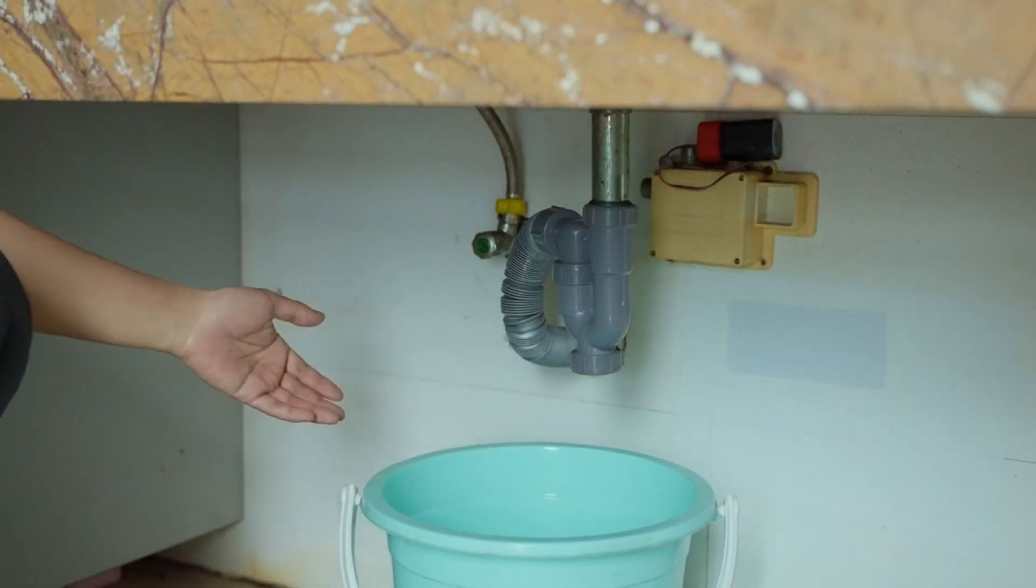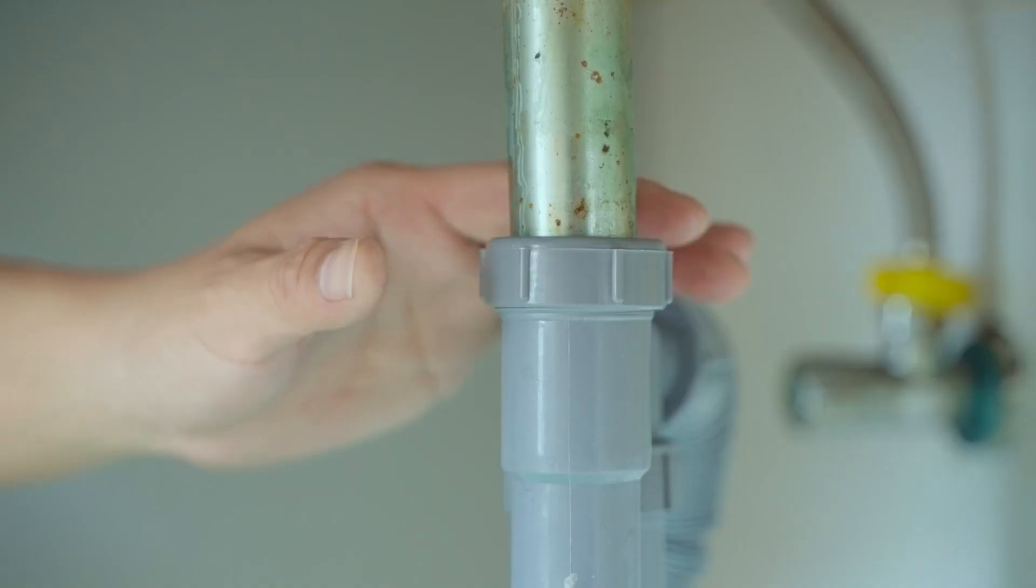Then you need to check for leaks. It's better to place a large bowl underneath to catch any water spilling from the trap.